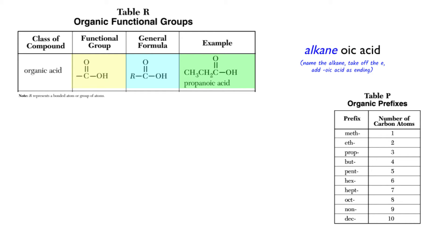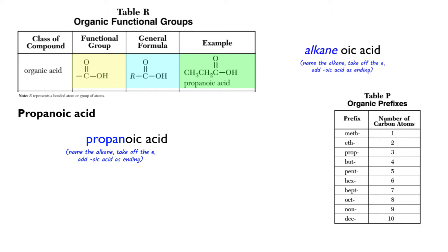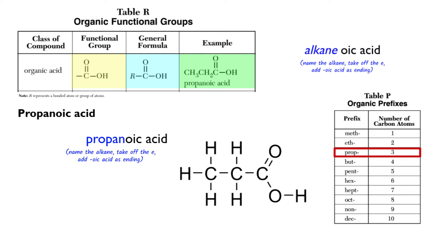Let's look more closely at propanoic acid and the naming rules. The "oic acid" ending tells me it's an organic acid, and that I need to look for the alkane chain — propane would be the alkane this is referring to. I took propane, removed the E, and added "oic acid." Looking at Table P, "prop" means three carbons. On that third carbon, I have a double bond to oxygen and then a single bond to another oxygen, which is bonded to a hydrogen — a carbonyl group plus an alcohol group. This is what makes it an organic acid.